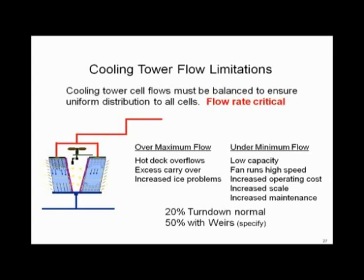Until recently, most towers — unless you specified otherwise — would only turn down 20 to 25 percent. For example, if a tower's design flow is 1,500 GPM, a 20% turn down means the minimum allowable flow would be 1,200 GPM. With 50% turn down, that minimum drops to 750 GPM. Get below that minimum and the towers don't work correctly — you start having issues.